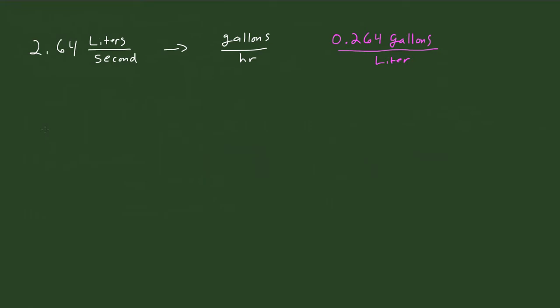Alright, so let's just do a quick example here. If I wanted to convert, for example, 2.64 liters per second into something like gallons per hour, how would we go about doing that?